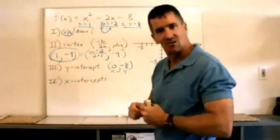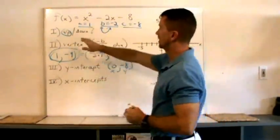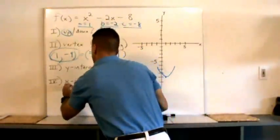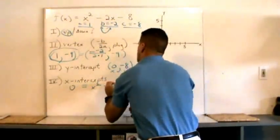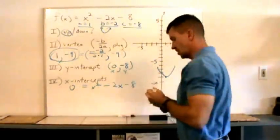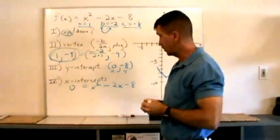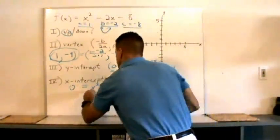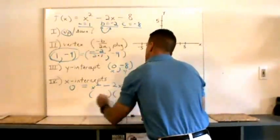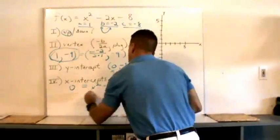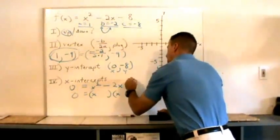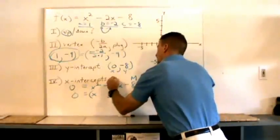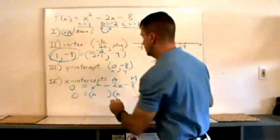To find the x-intercept, set y equal to zero, and solve for x. So I'll do that. I'm gonna set y equal to zero. X squared minus two x minus eight. You can solve this with the quadratic formula if you want, but we can factor that. We can factor this. Put an x here and an x here. What's two numbers that multiply to negative eight, and add up to negative two. That would be a negative four and a two.